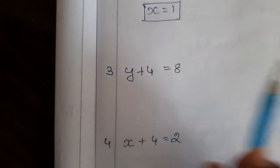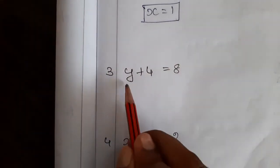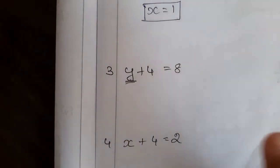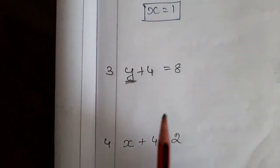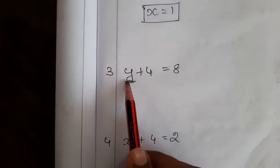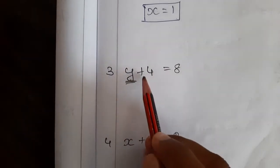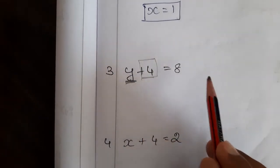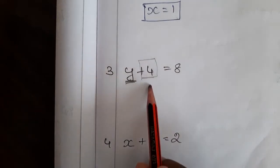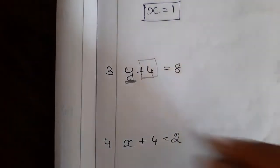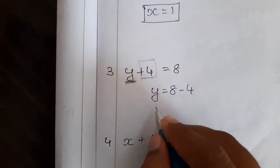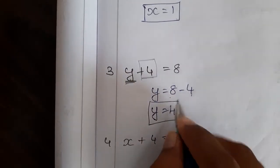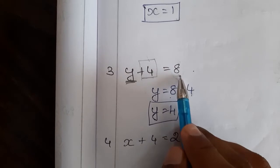Next problem: y plus 4 is equal to 8. What is the variable? That is our aim to find. Here the variable is y. Variable can be any letters, a to z. If the question asks to solve the equation, we have to find the value for the variable. Let me transpose plus 4 to the other side, that is RHS. Plus 4, if we transpose, it will become minus 4. So y is equal to 8 minus 4, which is 4. Only plus 4 we are changing here — the 8 remains the same.